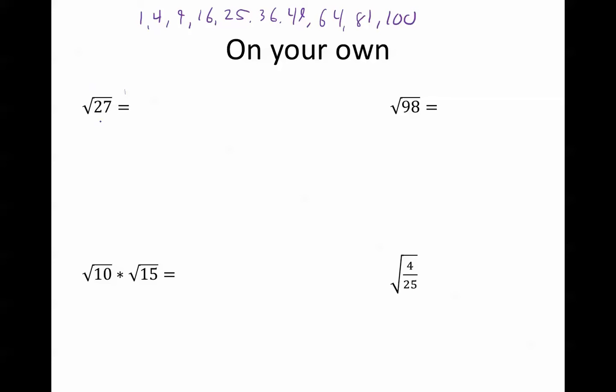Which of these numbers divides evenly into 27? Well, 25 doesn't work, 16 doesn't work, 9 does work. I can break 27 down to 9 times 3, and then that means I can make the square root of 9 times the square root of 3, which makes this 3 root 3.